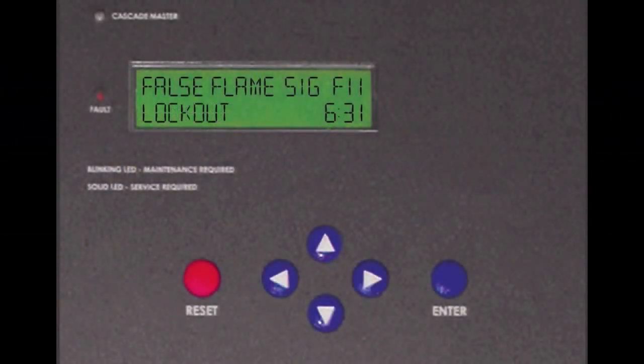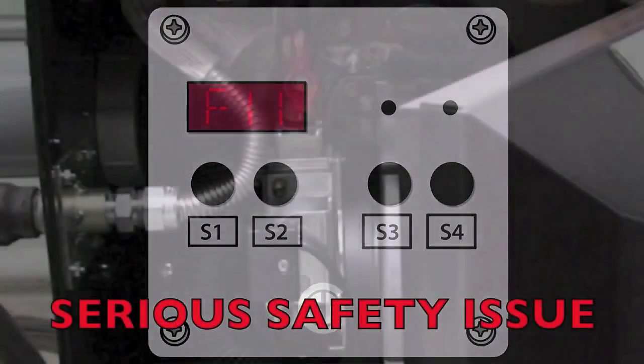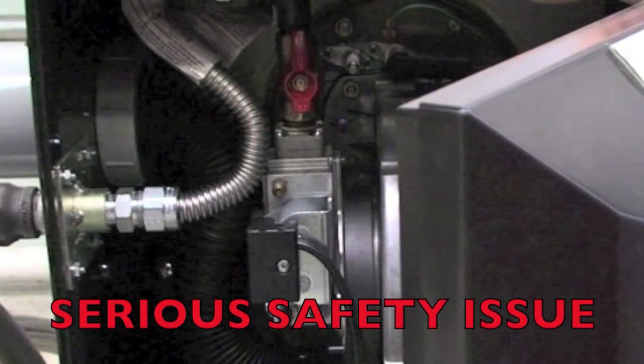The red light will display and the word lockout will flash, or you will see F11 in the display. This code indicates a serious safety issue.